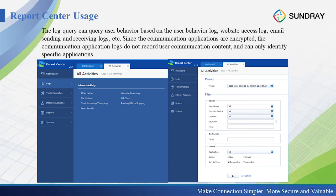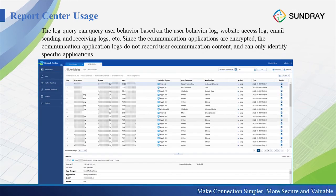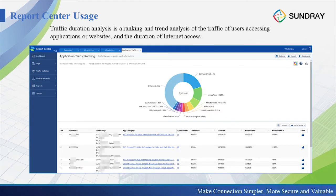In the log query, it can show you the username, the group the user is in, the MAC address of this user, the device type, the app category, and what kind of application they used. It will give you the details for you to check. The traffic duration analysis is a ranking and trend analysis of the traffic of users accessing applications or websites, giving you information about what app categories the user accessed and what they usually do.